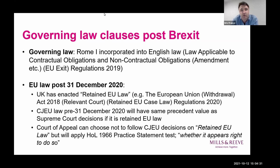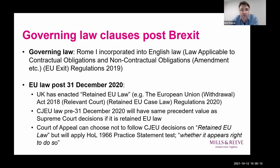The rules in Rome 1 also deal with where the contract is silent about what governing law should apply. Summarising: there are rules for different types of contracts. For example, in a supply contract, the governing law is the law where the supplier is based. So if you're worried about a dispute with an EU-based supplier, you may want to check that your contract contains an English governing law clause, because if it doesn't, whichever court looks at the dispute will likely conclude the contract is governed by the EU jurisdiction where the supplier is based.